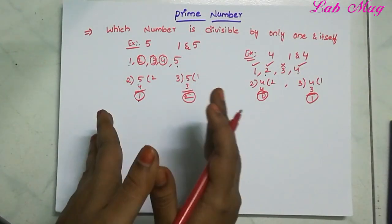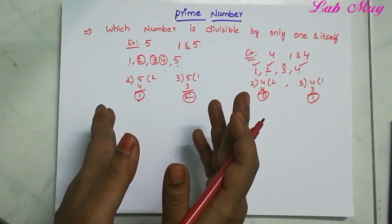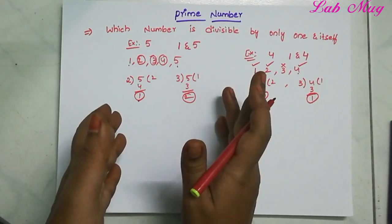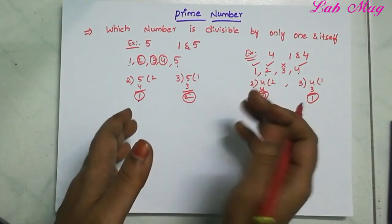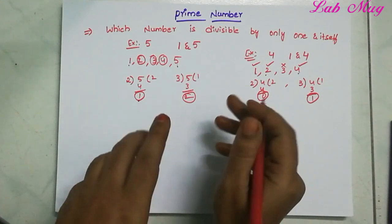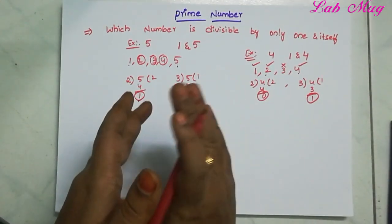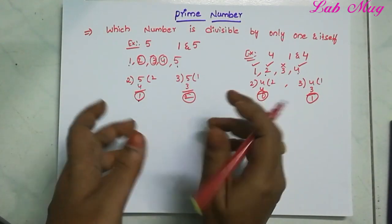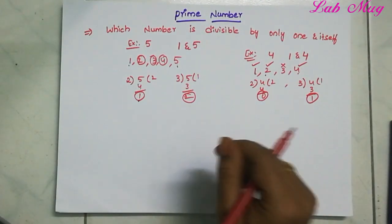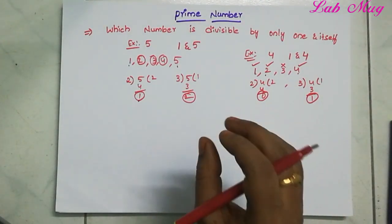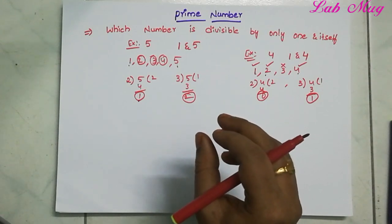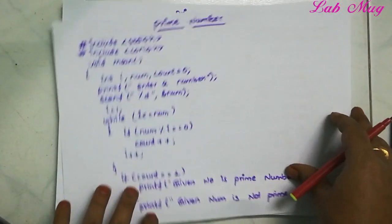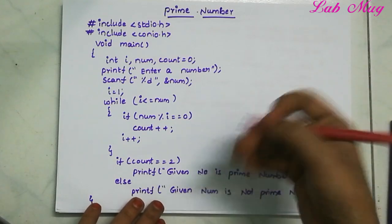Here we need to develop programs for prime numbers. Two types: first, a user enters a number and we check if that specific number is a prime number. Second, the user enters a number like 100 and we print only the prime numbers up to that value. In this video, we will develop the first type.